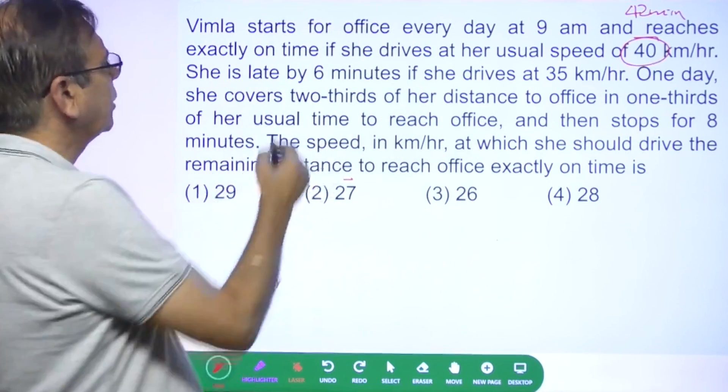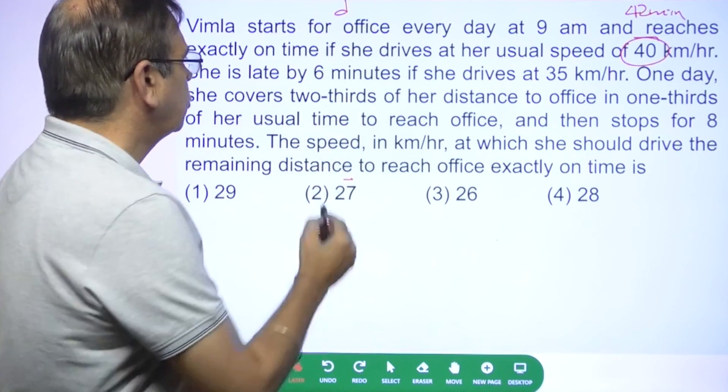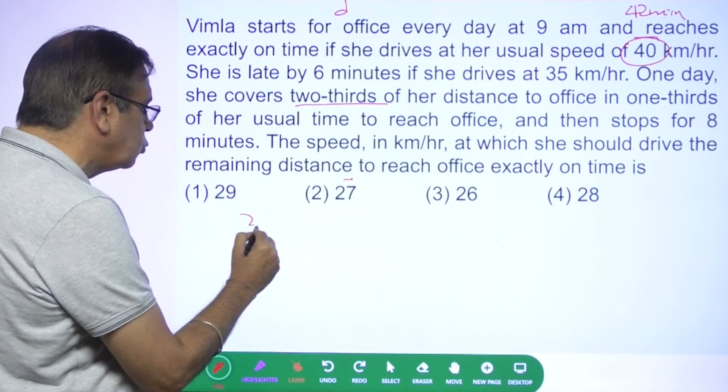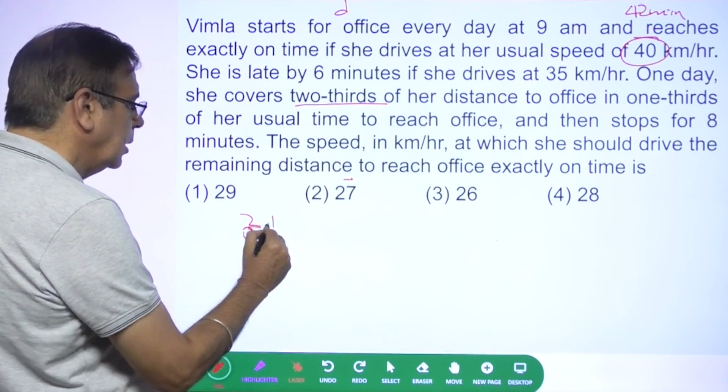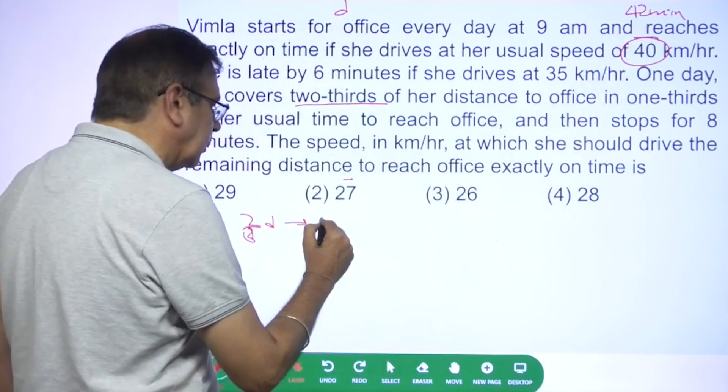Let me assume the distance is D. One day she covers two thirds of her distance in one third of her time. Two third of the distance, that means 2 by 3 D is covered in one third of the time. One third of 42 is 14 minutes.